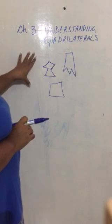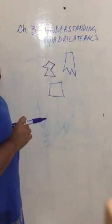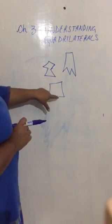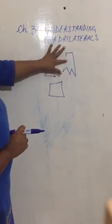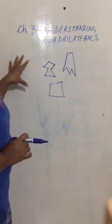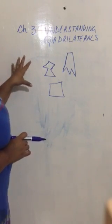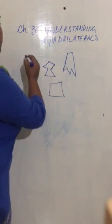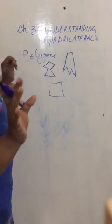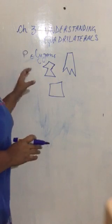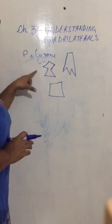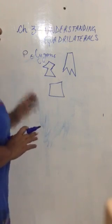You observe that all these simple closed curves are made up of line segments. I have not used any curve here — these are all line segments. So any simple closed curve made up of line segments is called a polygon. I have already uploaded the notes on Campus, so this type of simple closed curve made up of line segments is called a polygon.